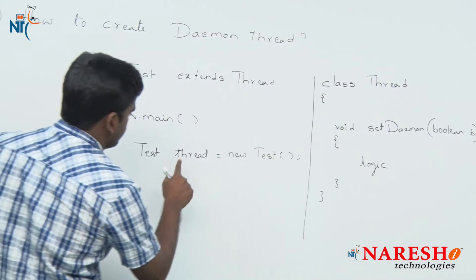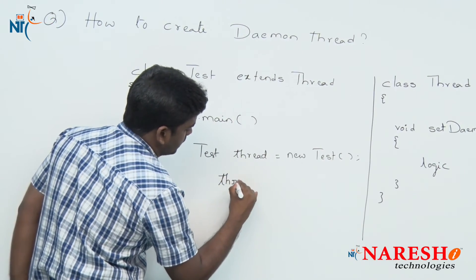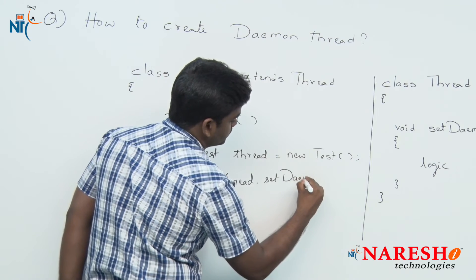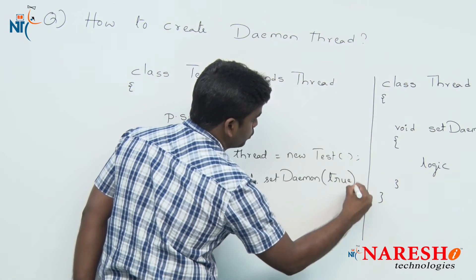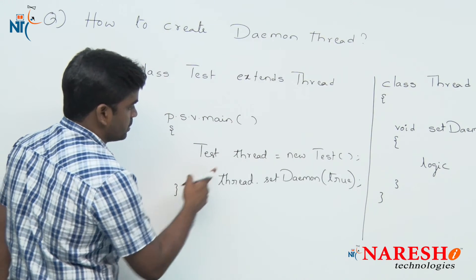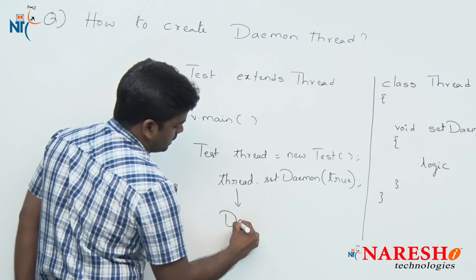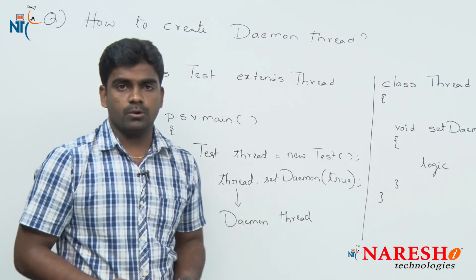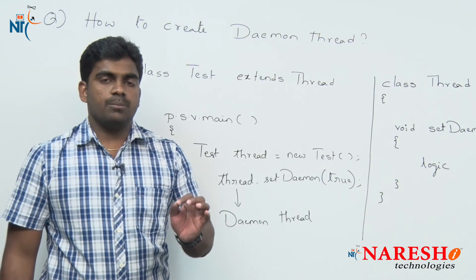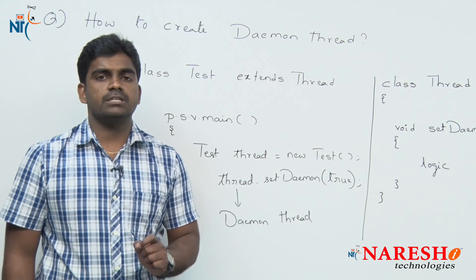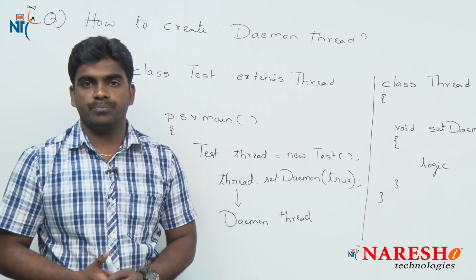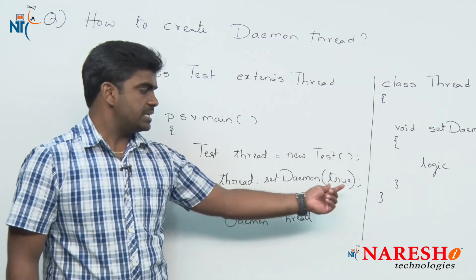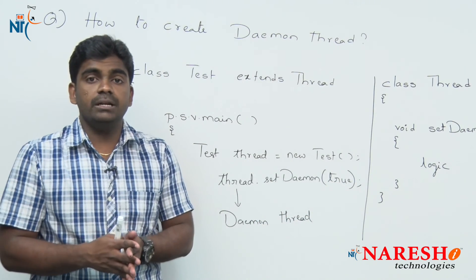Here we are applying it: on the thread object we call the non-static method setDaemon() and pass the Boolean value true. This is the conversion — now this thread behaves like a daemon thread. Daemon thread executes in the background, and once all non-daemon threads finish execution, all daemon threads are automatically moved to the dead state forcefully by the JVM. This is how to create a daemon thread using the setDaemon() method, which takes a Boolean and is a non-static method available in the Thread class.